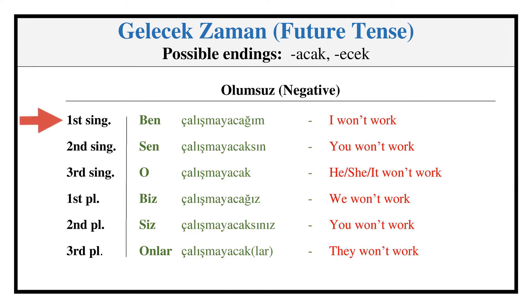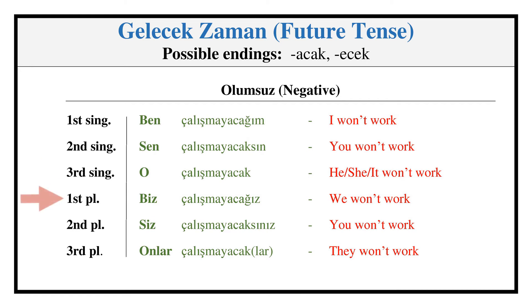Future Tense — Negative: ÇALIŞMAYACAĞIM, ÇALIŞMAYACAKSIN, ÇALIŞMAYACAK, ÇALIŞMAYACAĞIZ, ÇALIŞMAYACAKSINIZ, ÇALIŞMAYACAKLAR.